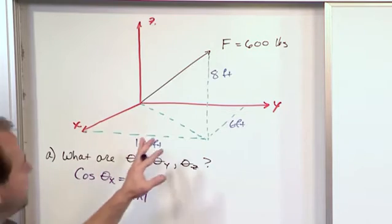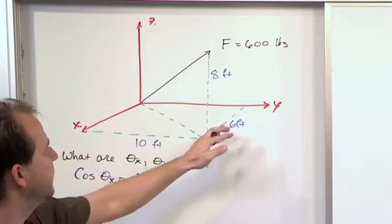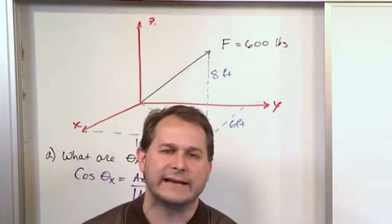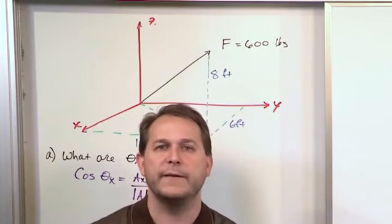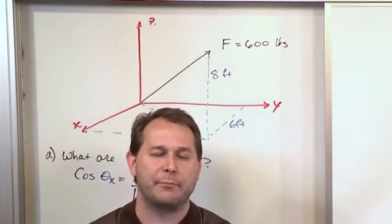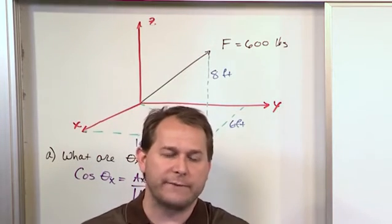But here, it's a little bit confusing because the actual vector is a force, but yet we're given these distances. So here's the deal. When you're given distances like that in a drawing, they really can serve two purposes. One, they're there to show you how large the apparatus is or whatever it is you're studying.